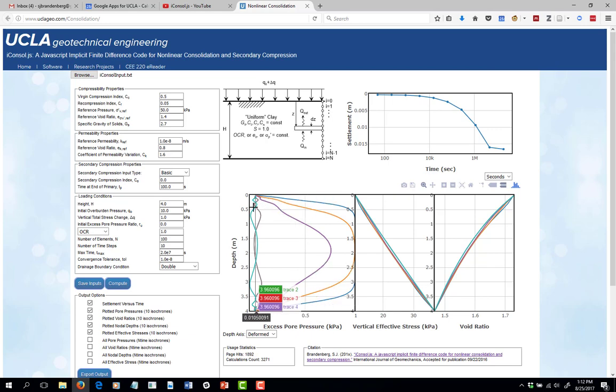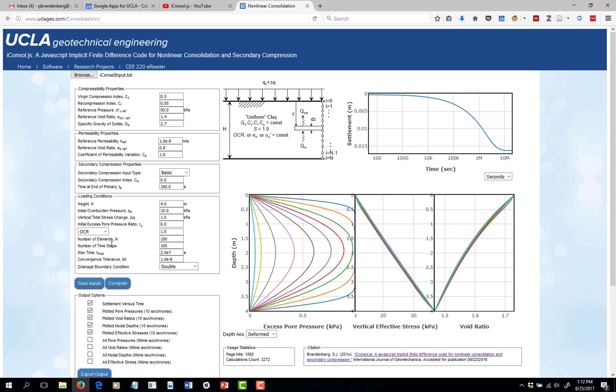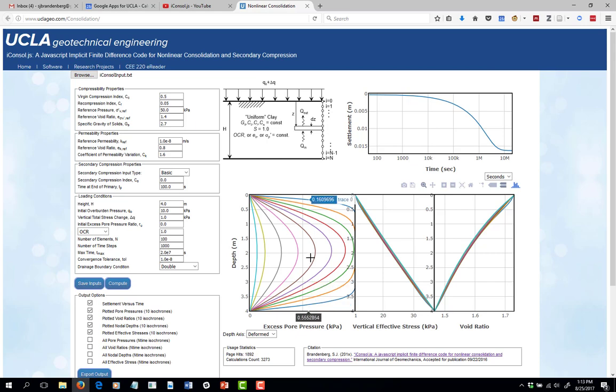So if you see things that are funny like this with isochrones oscillating back and forth, maybe try increasing the number of time steps. I think 100 is usually okay and it runs pretty fast. So there's no real reason to reduce the number of time steps. Even if we put 1,000 time steps and compute, that was pretty quick right there. The solution looks like it might have changed a little bit, but all that happened is that the time associated with these isochrones changed slightly. The solution for 100 is almost identical to 1,000.